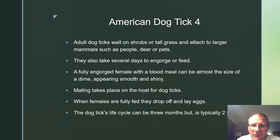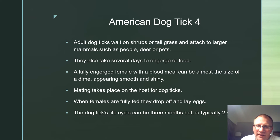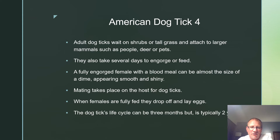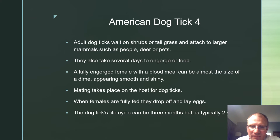Adult dog ticks wait on shrubs or tall grass to attach to larger mammals such as people, deer, or pets. They also take several days to engorge or feed. A fully engorged female with a blood meal can be almost the size of a dime, appearing smooth and shiny. Mating takes place on the host for dog ticks. When females are fully fed, they drop off and lay eggs. The dog tick's life cycle can be as short as three months but is typically two years.